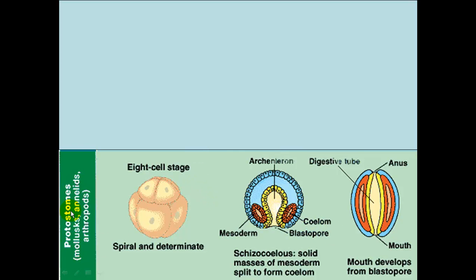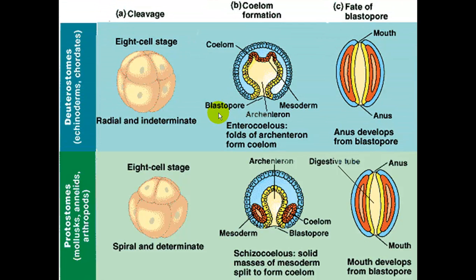So in protostomes, the opening that results is going to develop into the mouth. And in a deuterostome, the blastopore that develops is going to develop into the anus first.